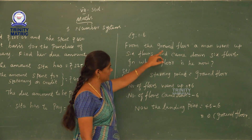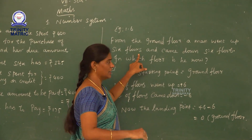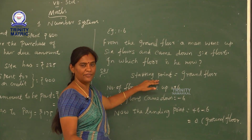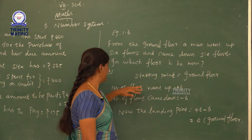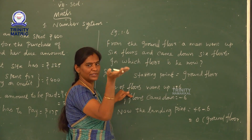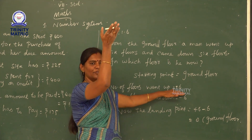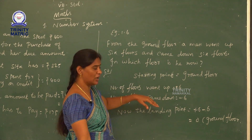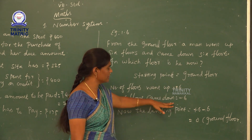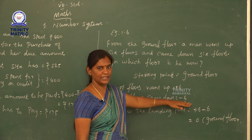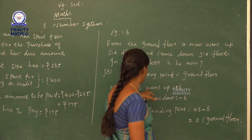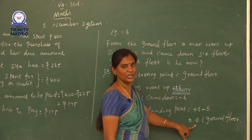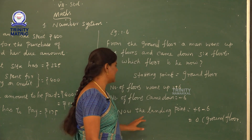Example 1.6: From the ground floor, a man went up six floors and came down six floors. The starting point is the ground floor. Going up six floors is plus 6. Then coming down six floors is minus 6. Plus 6 minus 6 equals zero. Zero is nothing but the ground floor, so he lands back at the ground floor.